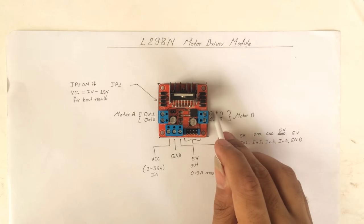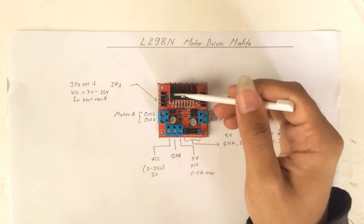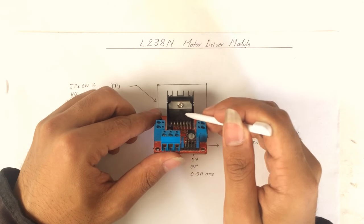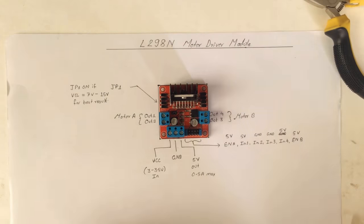This is our main IC, this is L298N, so it has its datasheet. Now let's start using this module.